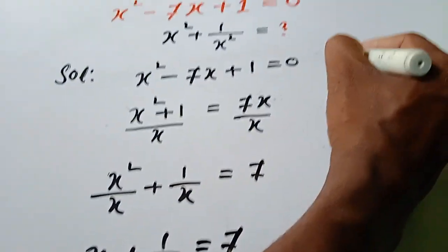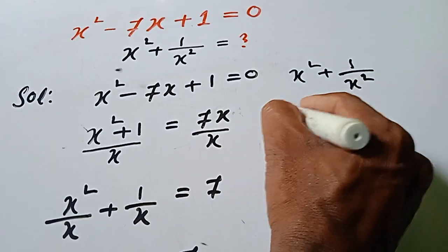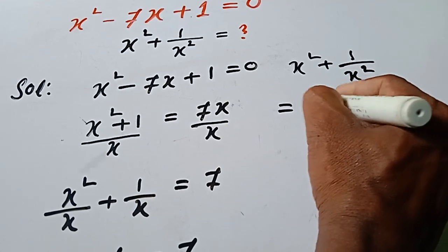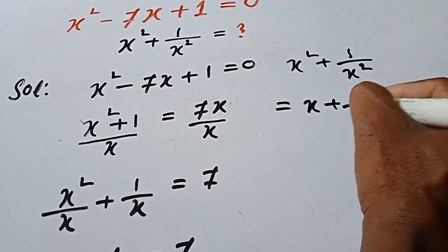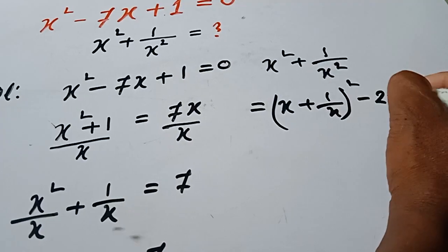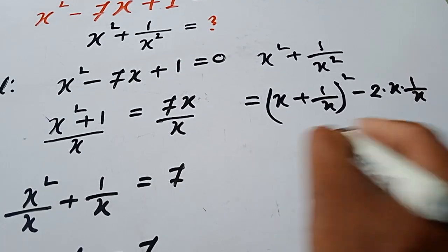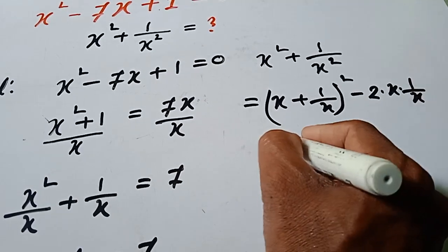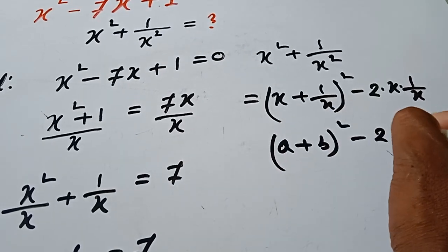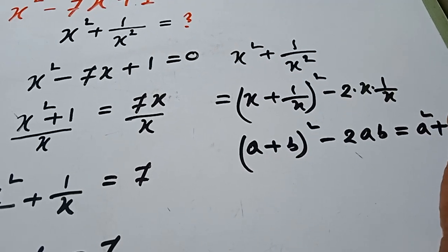Here the problem x square plus 1 over x square is equal to, here we can apply a square plus b square. a plus b whole square minus 2 times x times 1 over x. Here formula a plus b whole square minus 2ab is equal to a square plus b square.